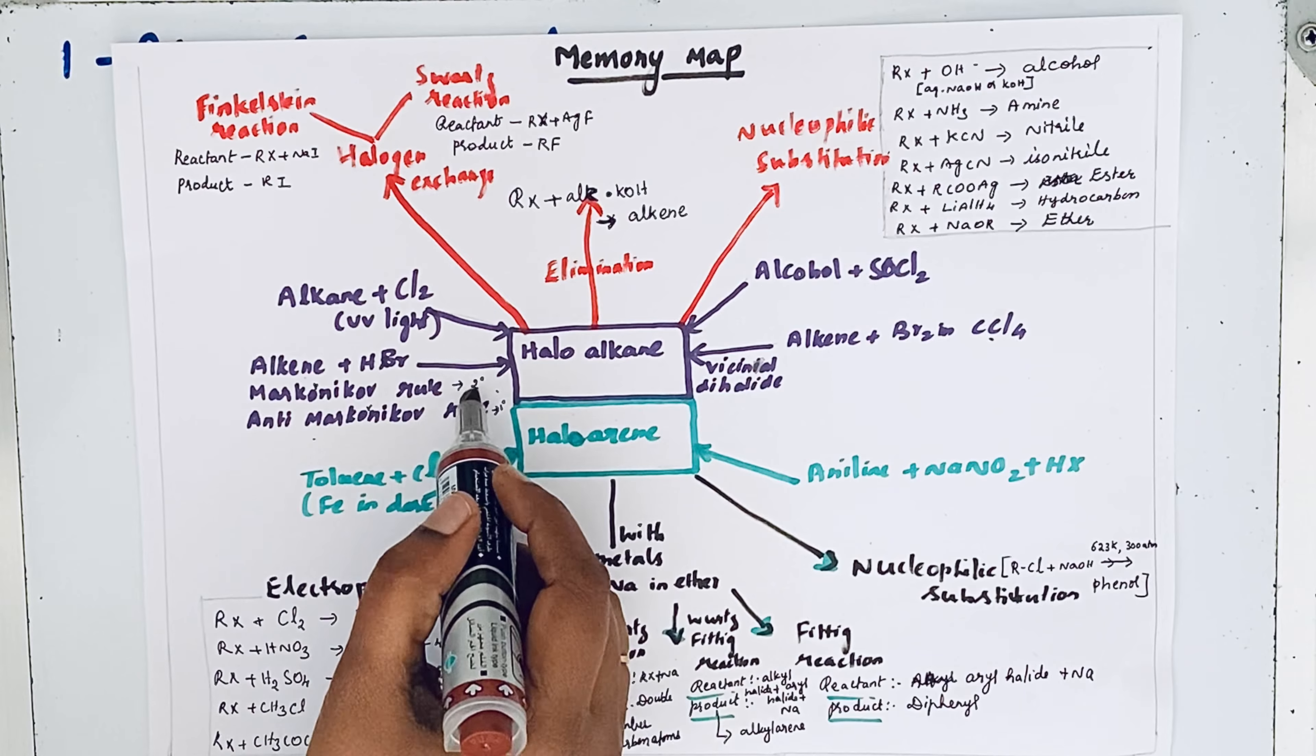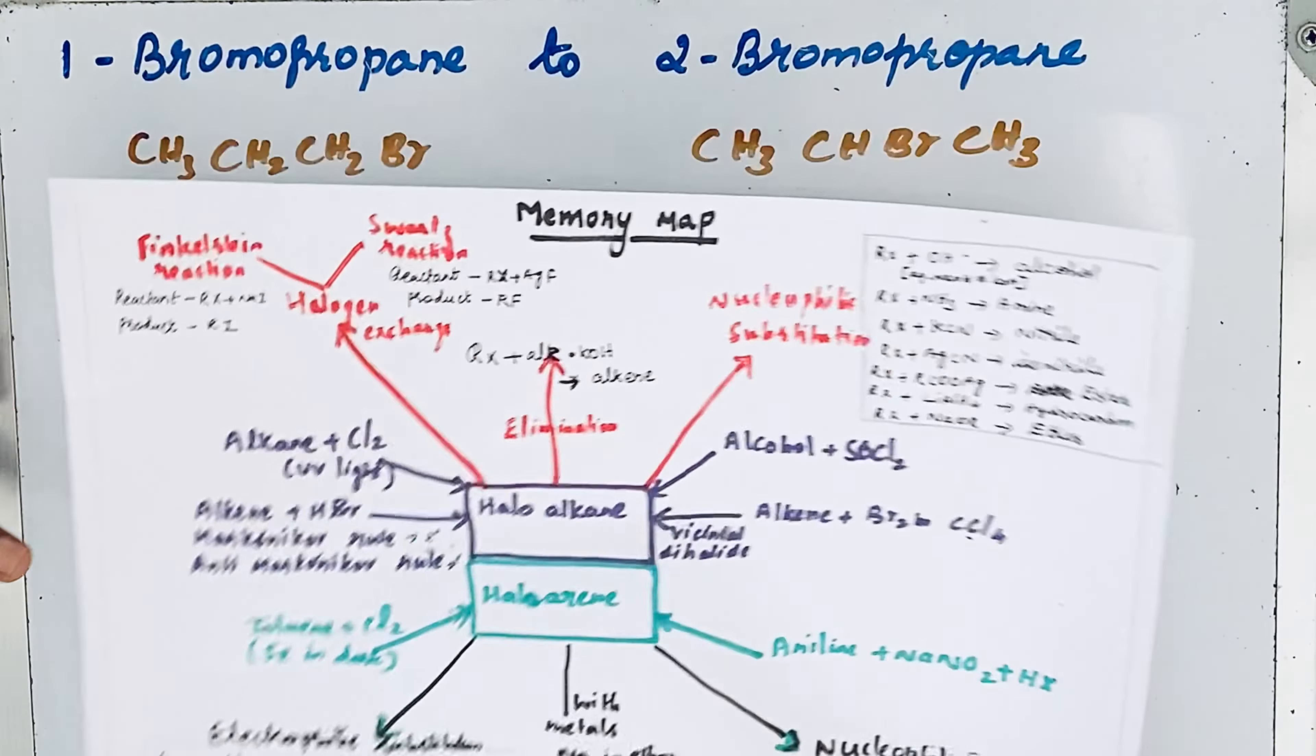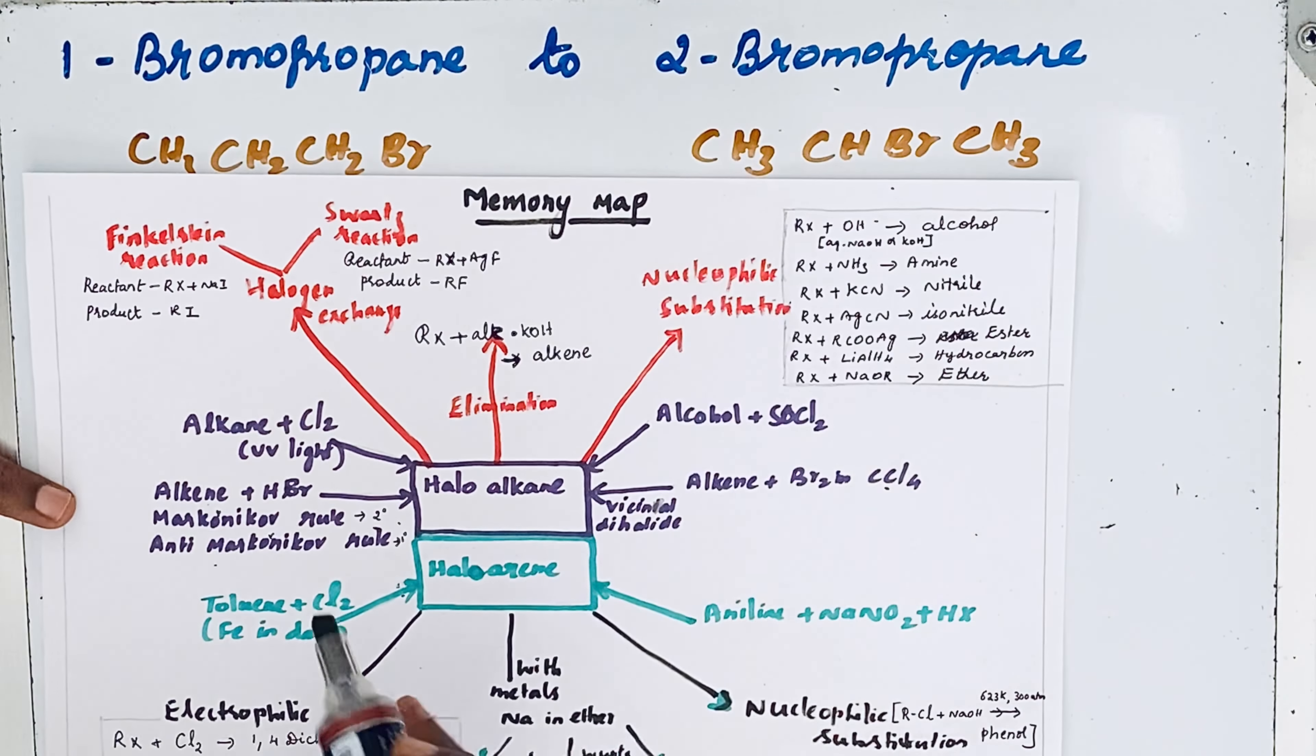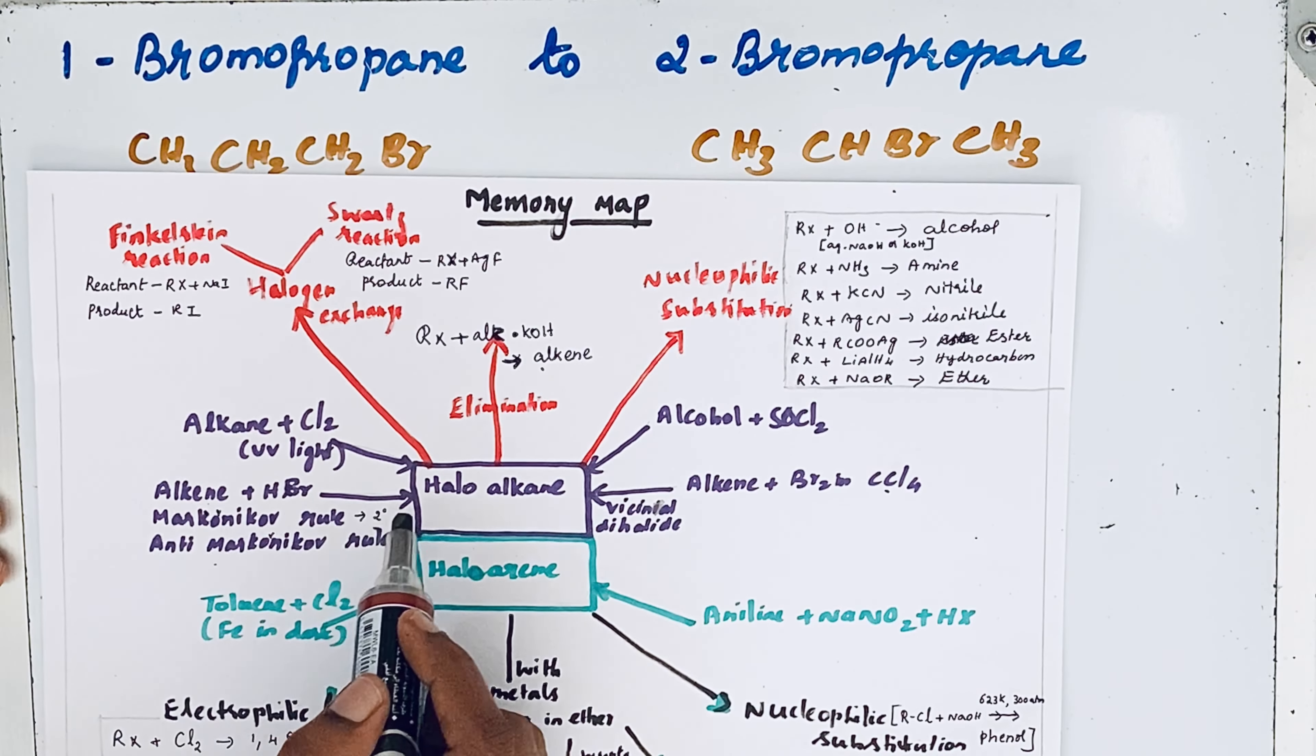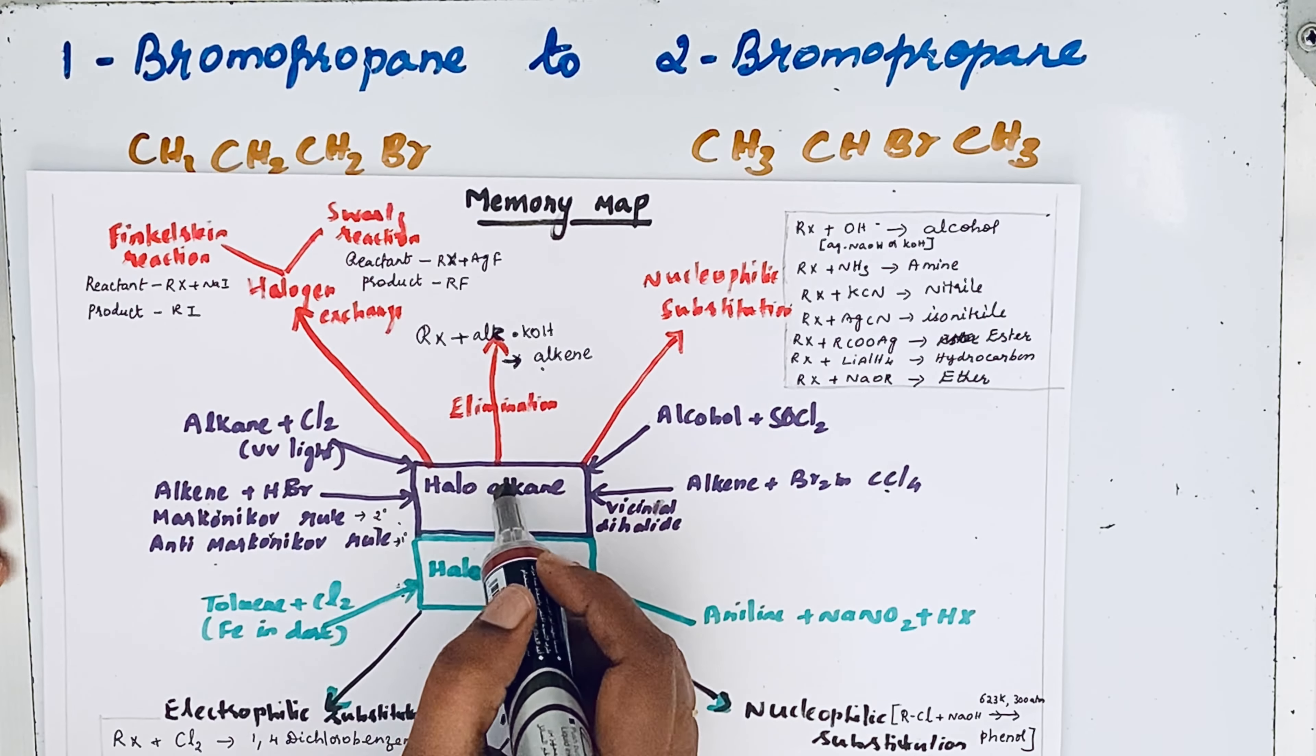Haloalkane primary or secondary can be achieved by Markovnikov's rule, but we already have 1-bromopropane. To change the position of halogen, first we need to convert them into alkene, then that alkene can again be changed into the desired product. So first we need to make that compound undergo elimination.